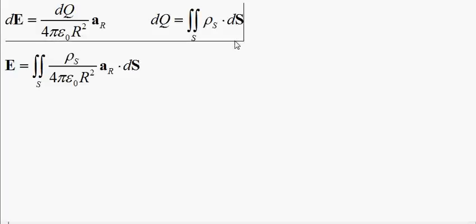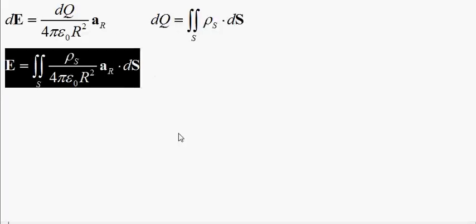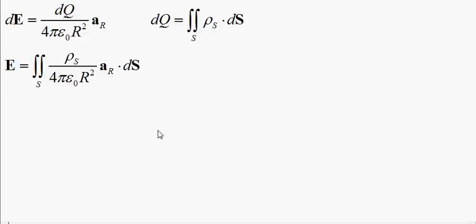In this video we're going to be assuming that rho sub S, the surface charge density, is constant. Putting these two together, we get this — this is pretty much what we had last time, and it's the same sort of type of approach. We have to get each part of this integral and just put it all together.